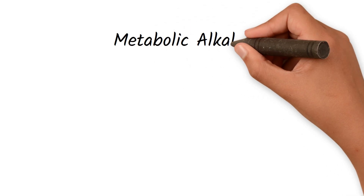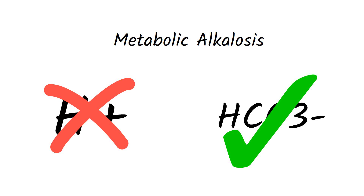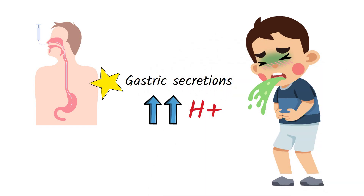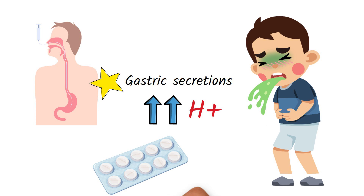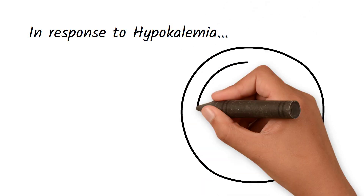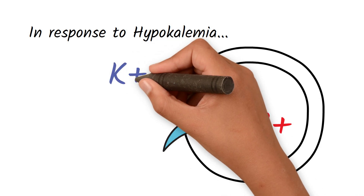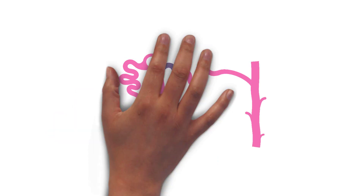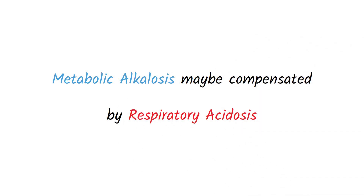Metabolic alkalosis can be caused by loss of hydrogen ions or retention of bicarbonate ions. You can lose hydrogen ions by prolonged vomiting or nasogastric tube suctioning, as gastric secretions have high levels of hydrogen ions. Excessive urinary loss of hydrogen ions due to diuretics can also lead to metabolic alkalosis. Hypokalemia can cause hydrogen ions to shift into cells — whenever potassium moves in or out of cells, hydrogen ions move in the opposite direction to maintain electrical neutrality. Renal tubular disorders can also cause metabolic alkalosis. Metabolic alkalosis may be compensated by respiratory acidosis.